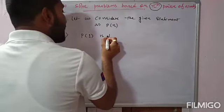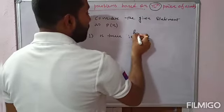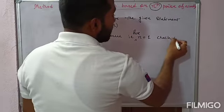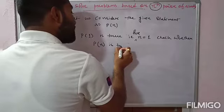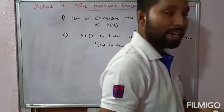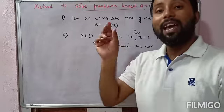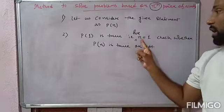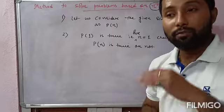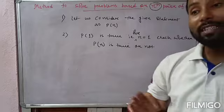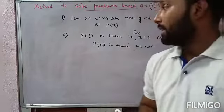The second step is: check whether P(n) is true or not, that is, check whether P(1) is true or not — for n equal to 1. Replace n by 1 on both sides. If left-hand side equals right-hand side, we say P(1) is true, otherwise it is false.